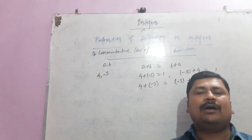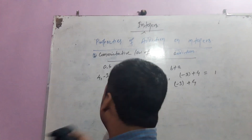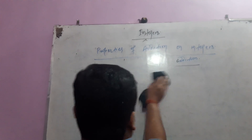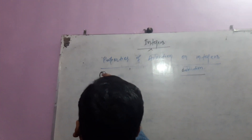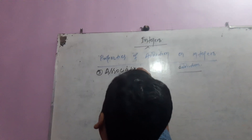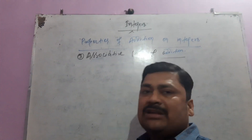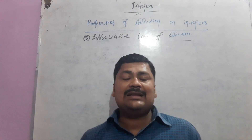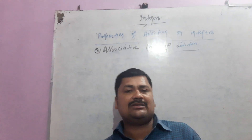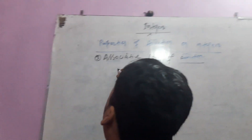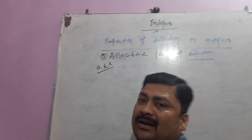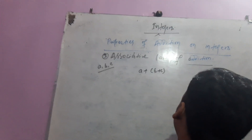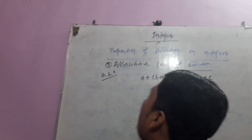The next law of addition is the Associative Law of Addition. According to this law, if we are adding more than two integers and we change or swap their grouping, the sum will not be affected. Suppose A, B, and C are three integers. If we add A with the sum of (B + C), or add C with the sum of (A + B), the result will always be the same.